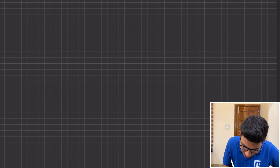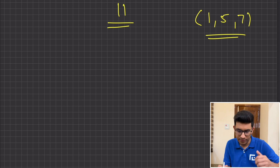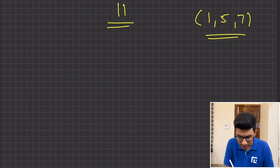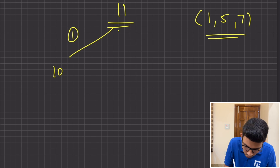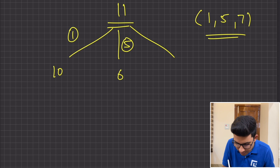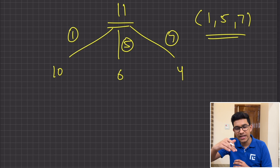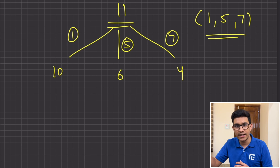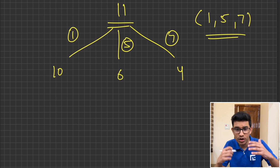For example, to construct sum 11 with coins 1, 5, and 7: if you use coin 1, you would need to construct 10. If you use coin 5, you would need to construct 6. If you use coin 7, you would need to construct 4. So 10, 6, and 4 are the smaller sub-problems you want to solve in order to get the answer for 11.